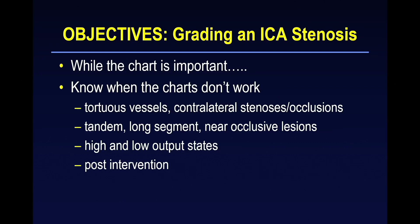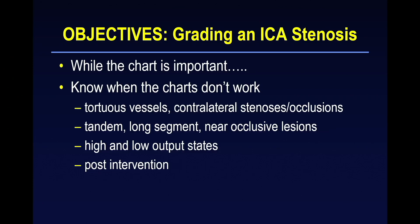Lots of data have shown that the degree of ICA stenosis is a very good surrogate marker for the risk of stroke. While the charts we all use to grade ICA stenosis using Doppler criteria are extremely important, you do need to know when those charts do not work — and they do not work when a patient has very tortuous vessels, a contralateral stenosis or occlusion, tandem long-segment or near-occlusive lesions, patients with high or low cardiac output states, and patients following intervention with either endarterectomy or stent placement.